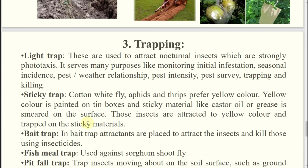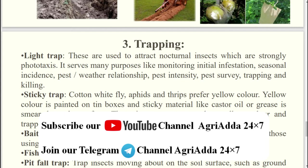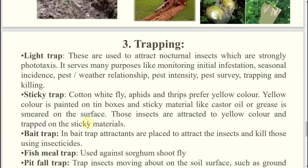What is a sticky trap? One colored paper will be there and some transparent gum will be above that color. Yellow color is used for which insect? For aphid, whitefly, thrips — you can use it. So it is known as a yellow sticky trap. The visible spectrum of human beings is 380 to 750 nanometers, that means violet to red. In case of insects, UV is also included — UV, violet, then up to red — they can perceive even lesser wavelengths.